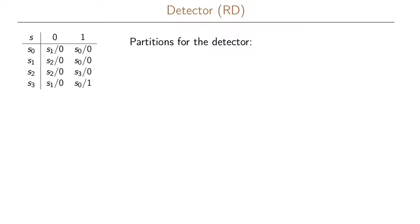Let us do our algorithm for reduced dependency, looking at each pair of states. Starting with the first pair s0 and s1, we call this partition p01 and group these two states together. For the zero input, we want s1 and s2 to be in the same partition, and for the one input, we want s0 and s0 to be in the same partition. Since we want s1 and s2 together and already have s0 and s1, we need to add s2 to this partition.